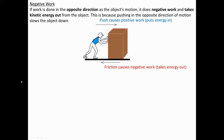Negative work is when the force is acting in the opposite direction as the object's motion. This person is pushing forward, causing positive work because the object moves in the same direction — they're putting energy in, speeding the object up and giving it kinetic energy. But friction between the bottom of the object and the floor always pushes backwards, so friction always causes negative work because it acts to slow the object down and takes kinetic energy out of the object.